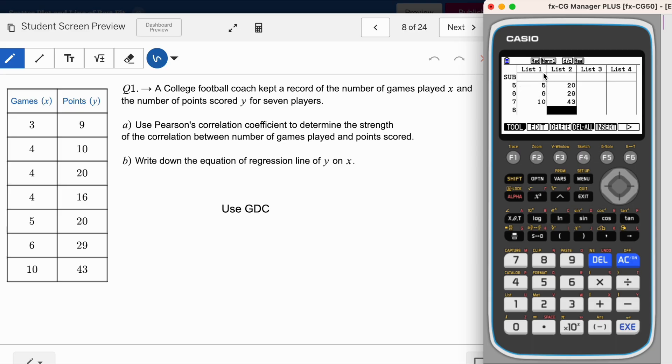After entering these values in list one and list two, we are going to see the correct options on this bar. You can see here tool, edit, delete. I don't want to delete. If everything is okay, you can click on F6 so that you can actually see the correct options which we need. The correct options are graph and calculate. You can see here it's on F1 and F2. You can go to graph.